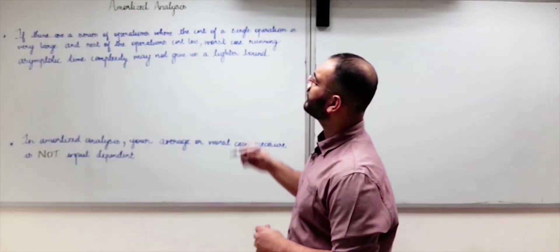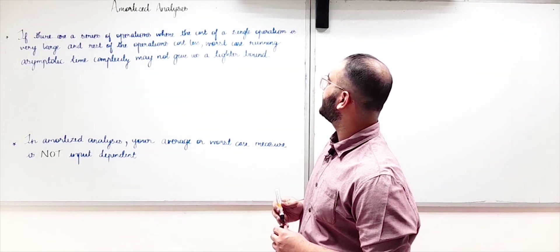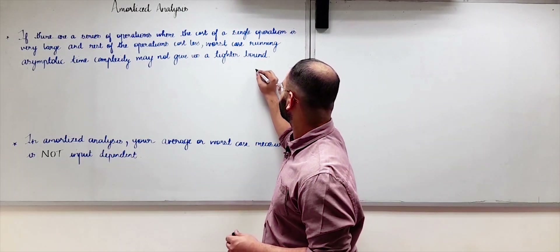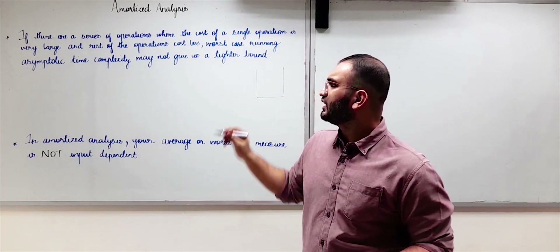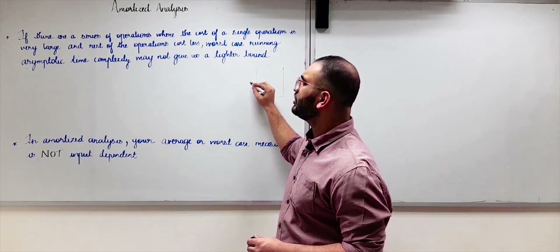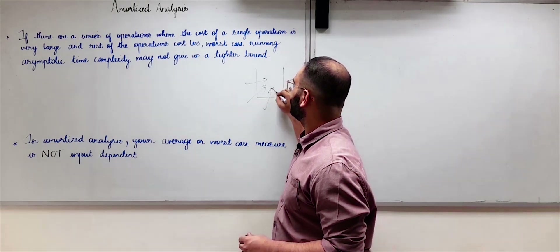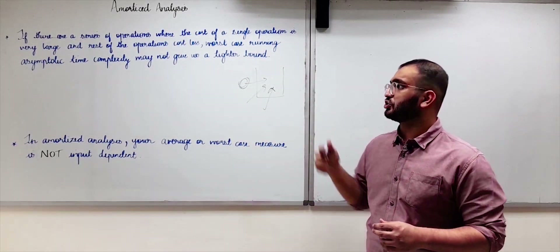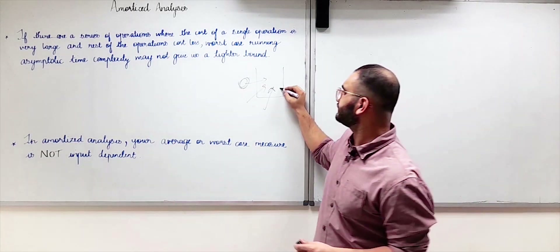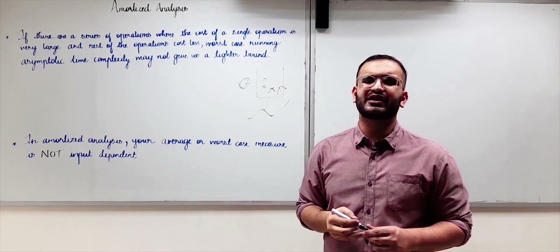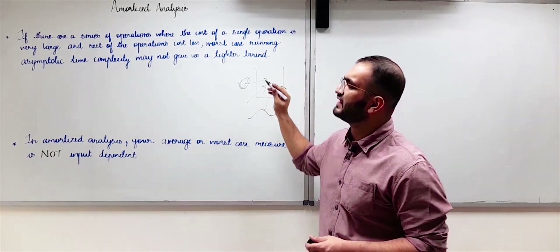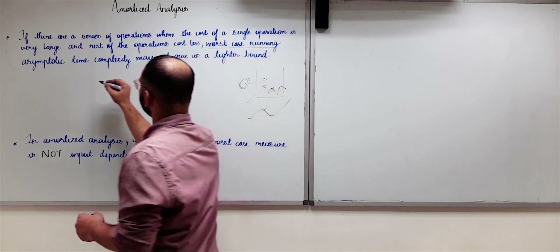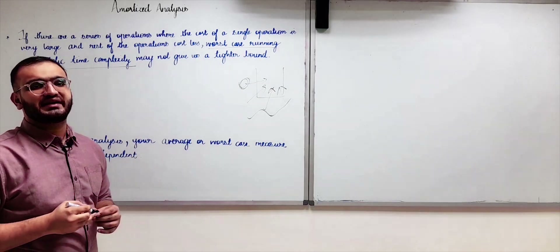If there are a series of operations where the cost of a single operation is very large — consider any data structure where many operations are performed, but there is one single operation whose time complexity or cost is very large while the rest of the operations have a lower cost — in such a case, the worst-case asymptotic time complexity may not give us a tighter bound.